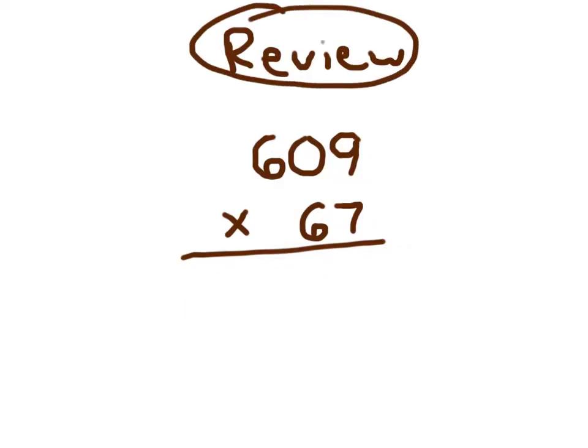So again, in review, all you do is that you have to absolutely have to regroup correctly. So that 7 times 9, which is 63. We place the 3, and we regroup that 6 right into the next place over, in the tens place in this particular case. 7 times 0, which is 0, plus 6, which is 6. And 7 times 6 is 42.